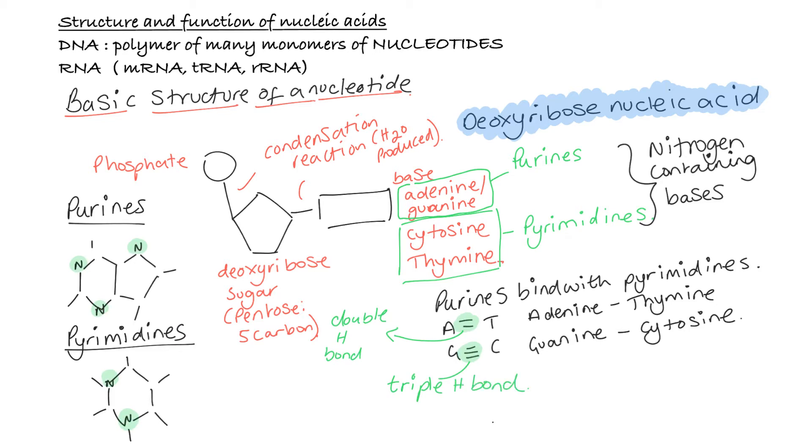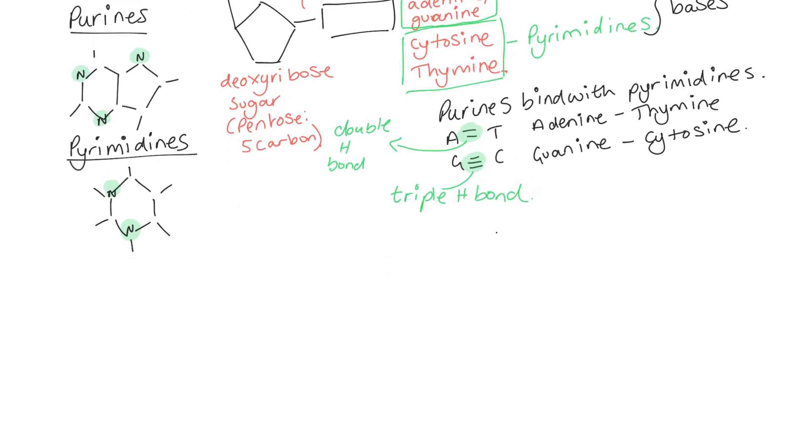So now we hopefully have a better understanding of the monomers of DNA. Let's look at the polymer of DNA. You already know that DNA forms a double helix. And this double helix is not a single strand of DNA, but two wrapped around each other and joined together by hydrogen bonds to form this helix.